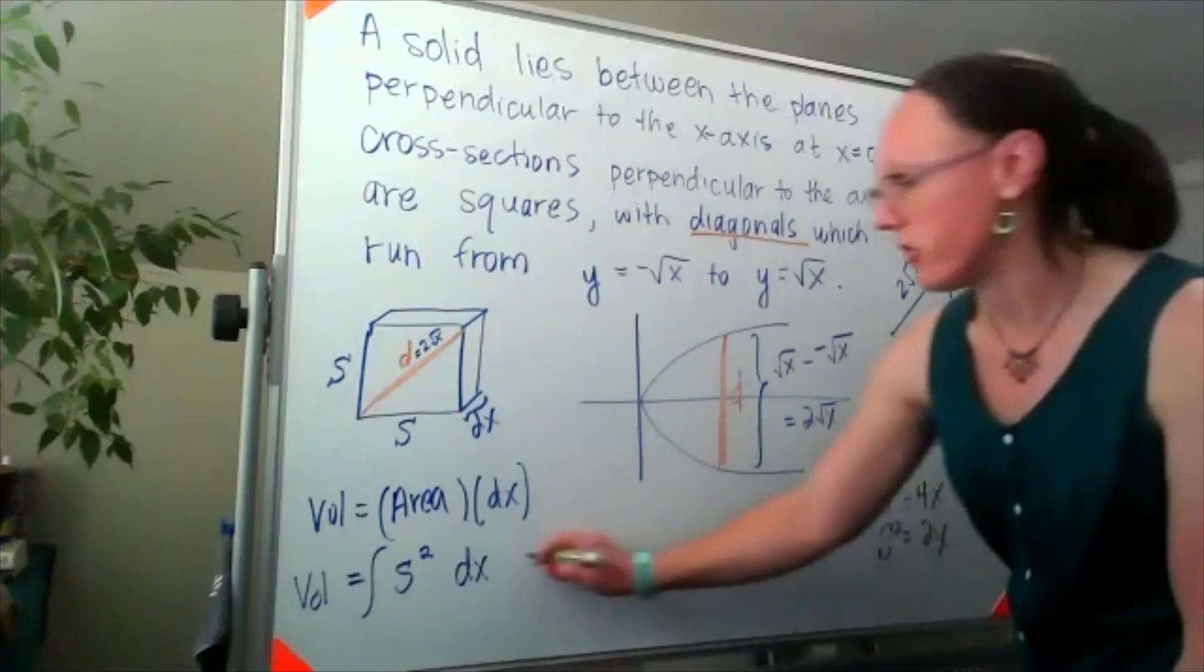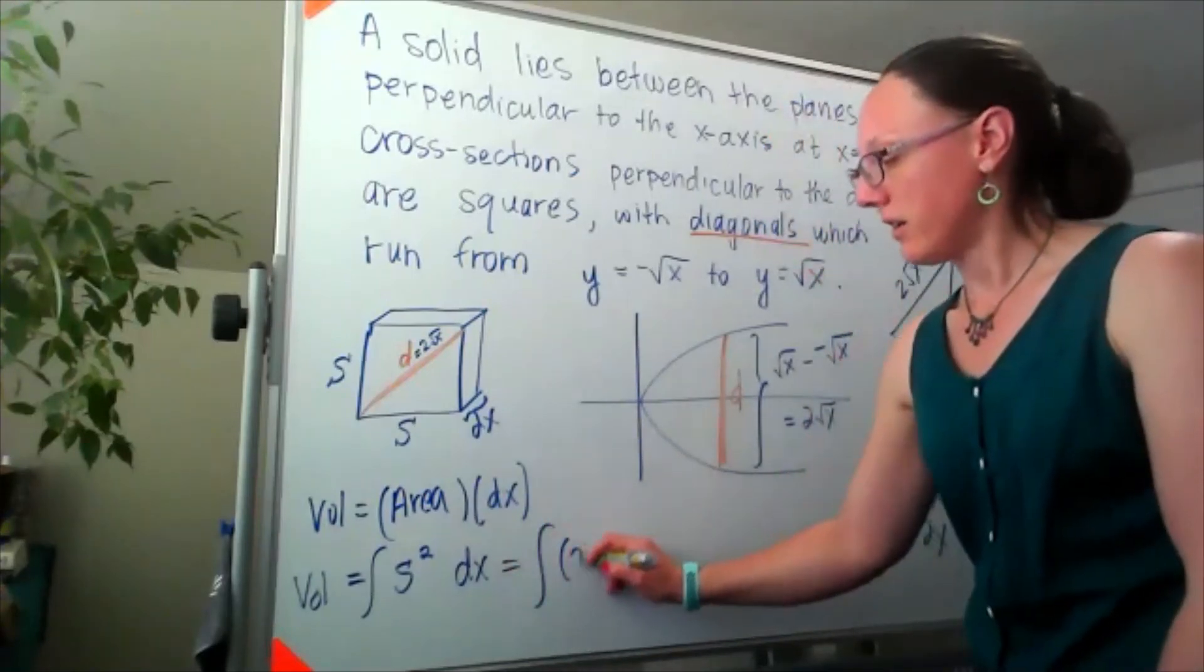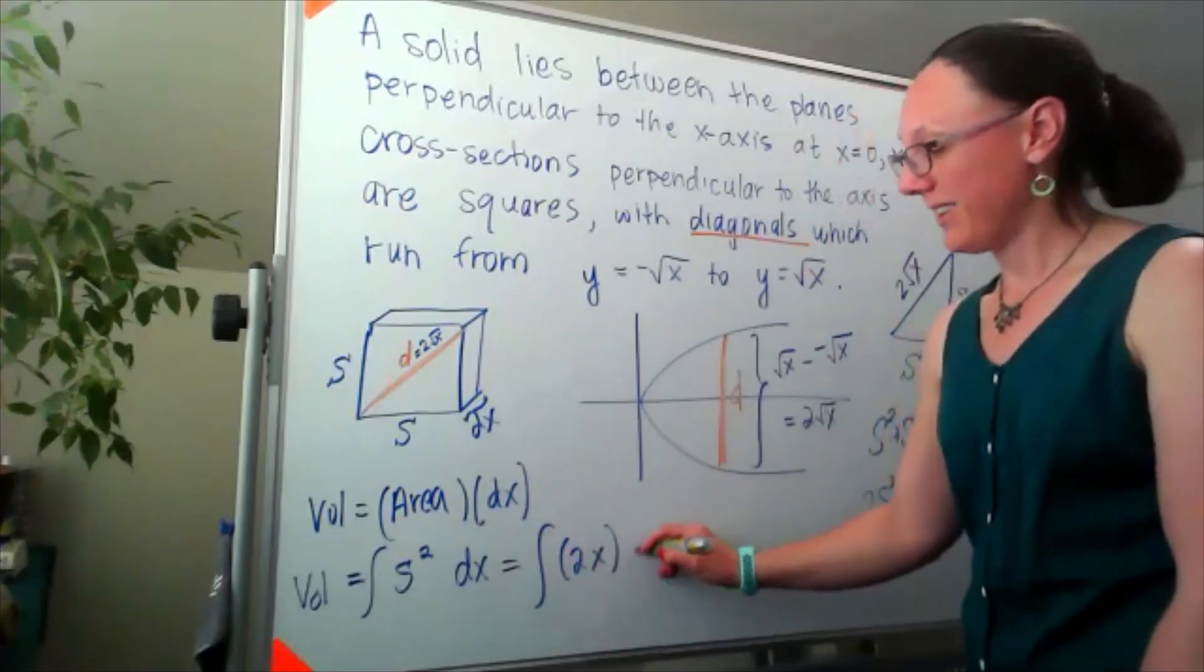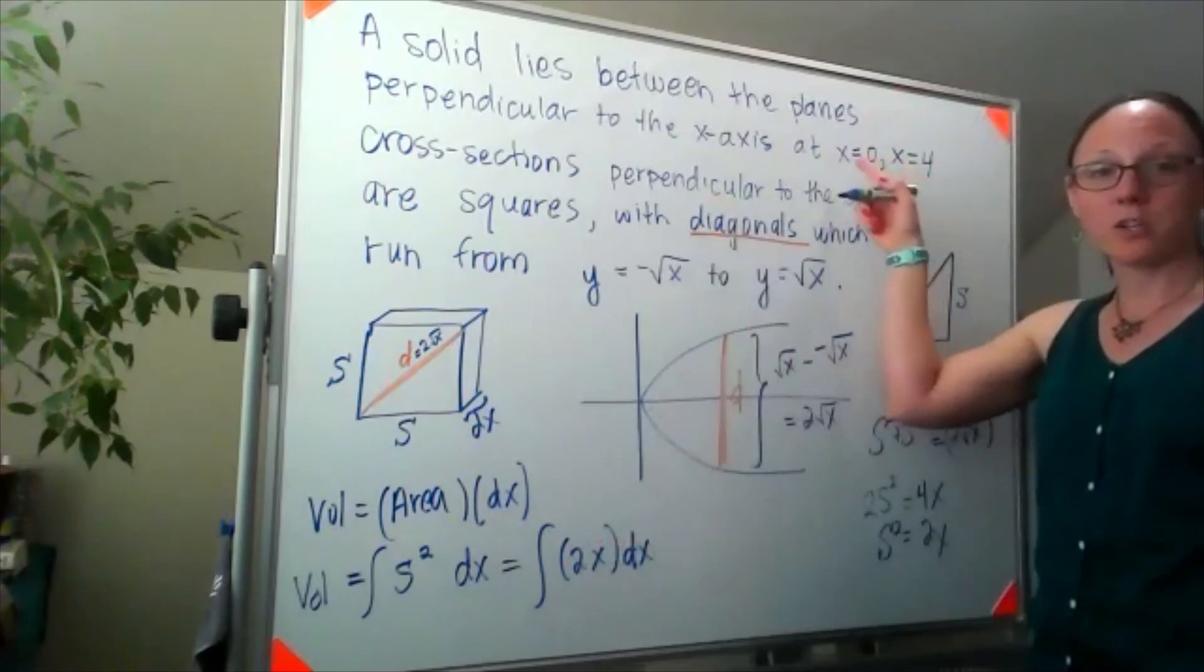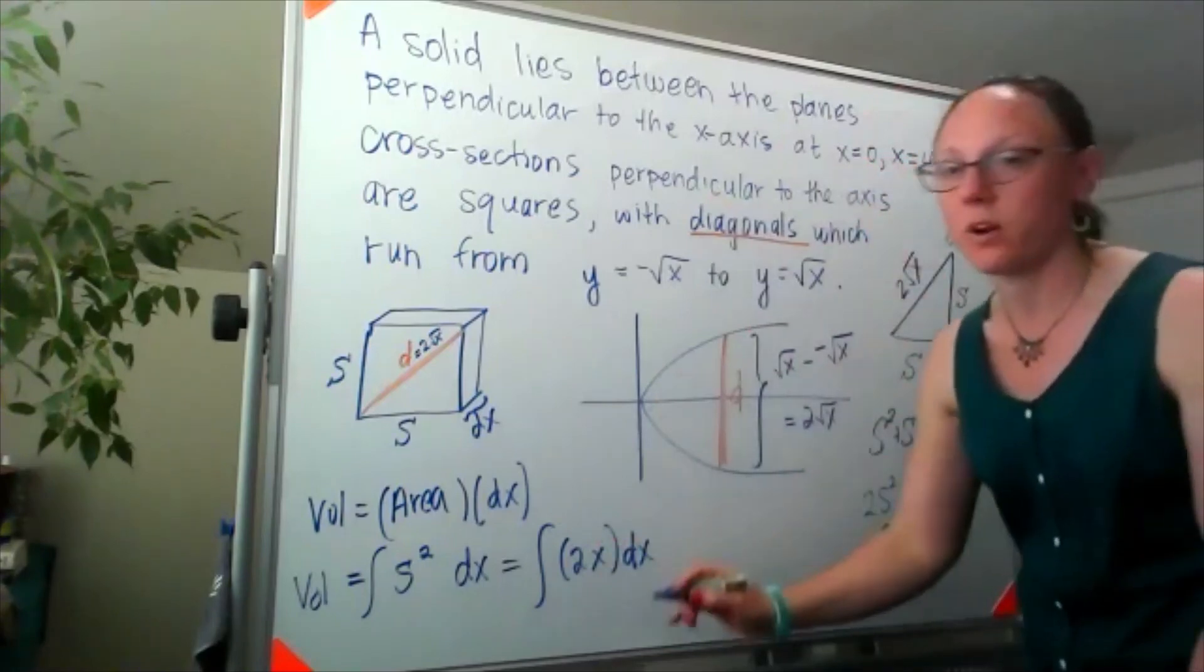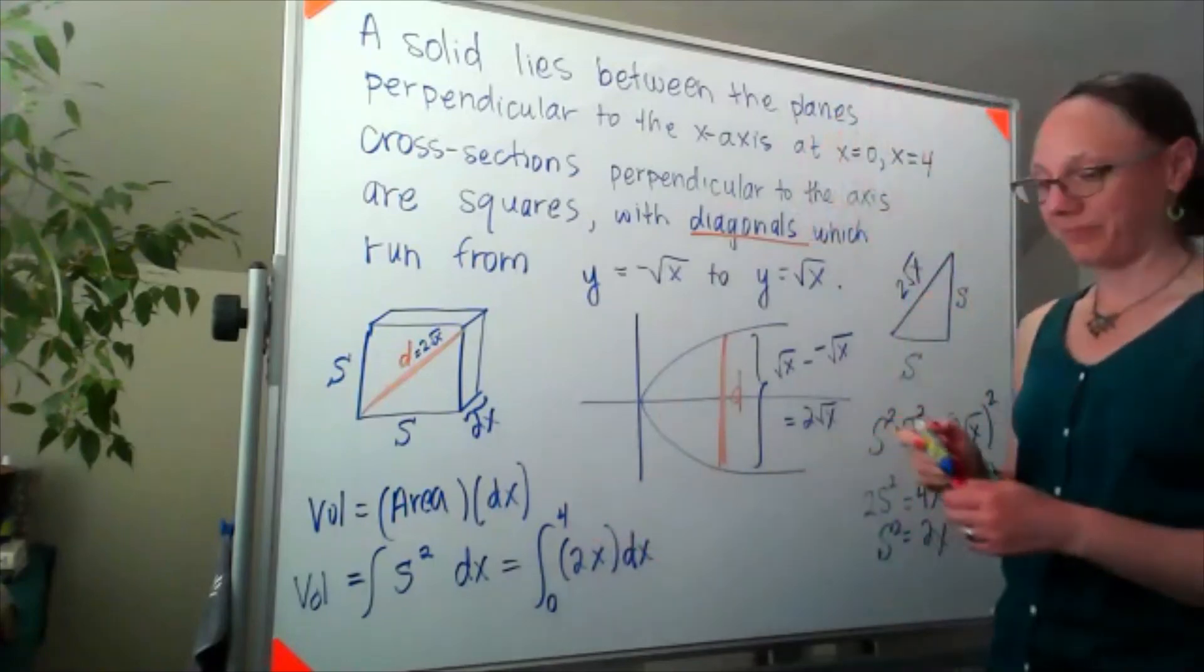Bringing that back to our volume equation, my volume would look like 2x dx. And because we were told we're between x equals 0 and x equals 4, this integral goes from 0 to 4.